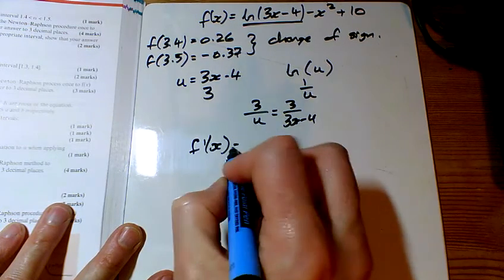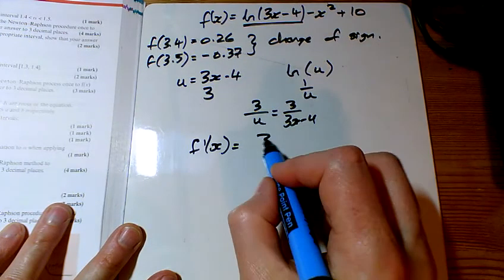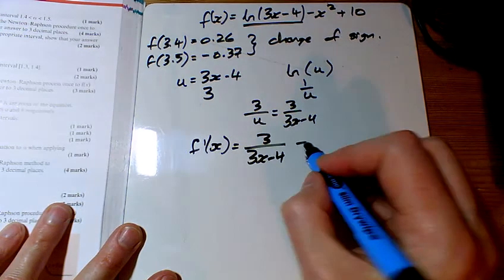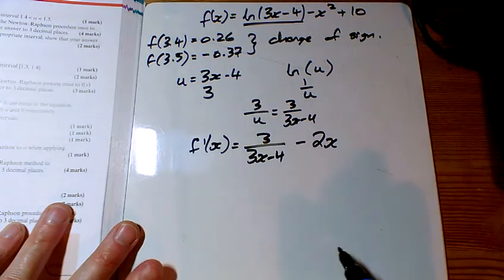So what is f dashed of x? It's that bit there, 3 over 3x minus 4, and then just take away 2x. I haven't got to do anything else.